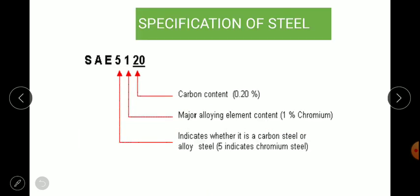Another example, SAE 5120. Five indicates chromium steel. One is the percentage of alloying element - since chromium steel, chromium will be added one percent. And 20 divided by 100 gives carbon percent.